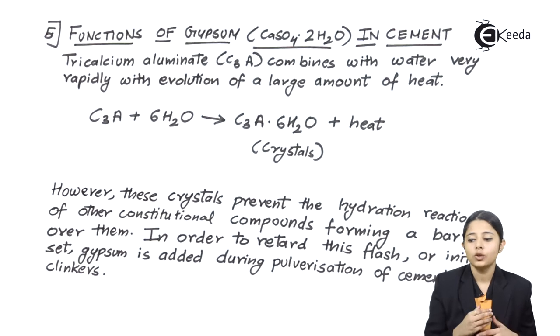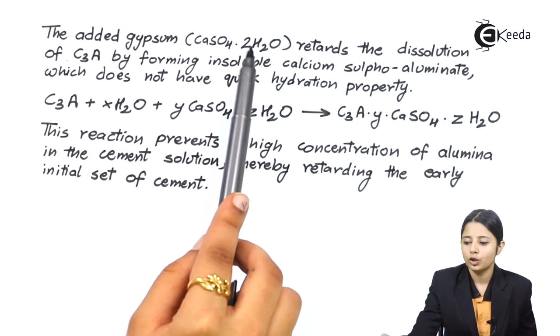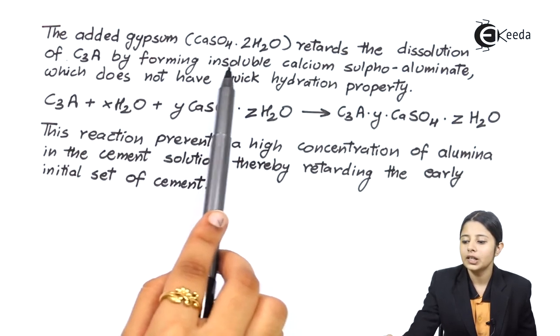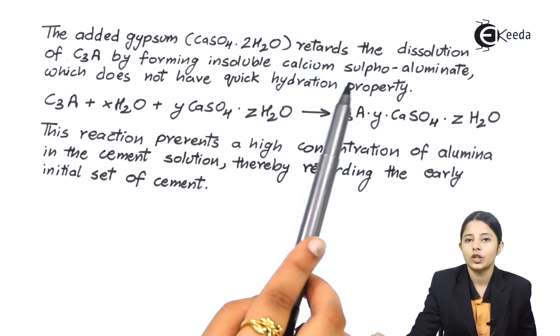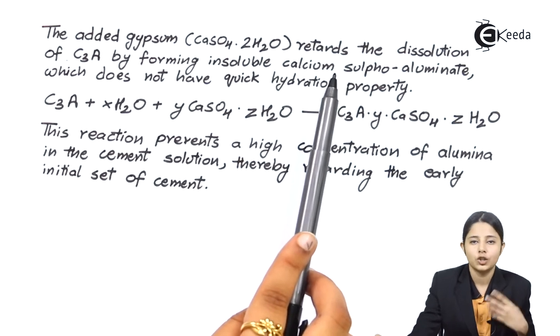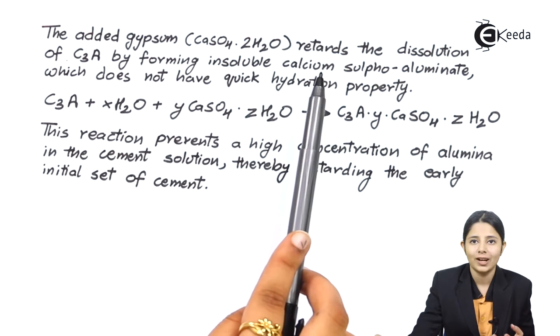Gypsum is added during the pulverization of cement clinkers. So when the cement is pulverized what do you mean by pulverization? It means powdering of the cement into small fine powder. It happens in the rollers which are known as clinkers. Over there gypsum is added to it. The added gypsum CaSO4.2H2O retards the dissolution of C3A by forming insoluble calcium sulfoaluminate which does not give quick hydration property. So now this calcium sulfoaluminate will not give a very quick hydration property. And that is the reason why the cement will not go under hydration reactions very quickly.